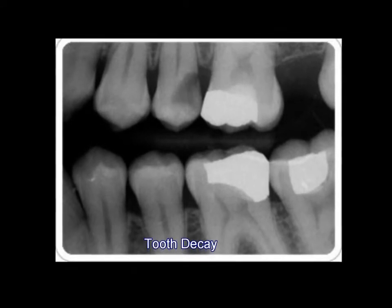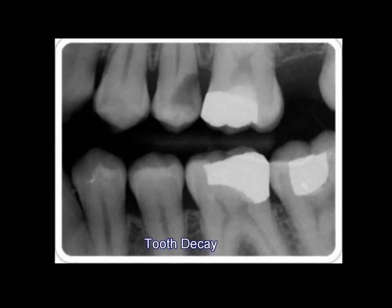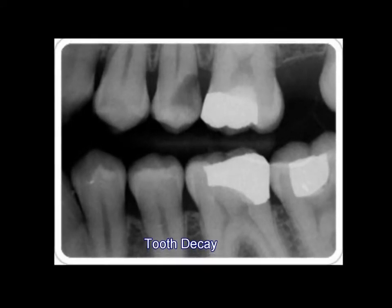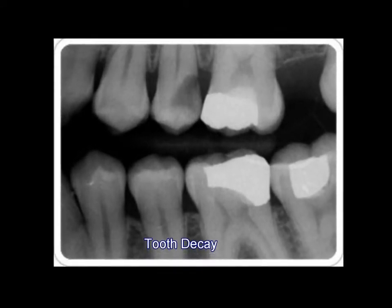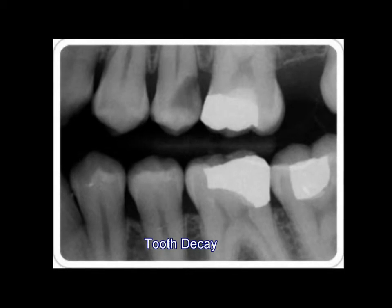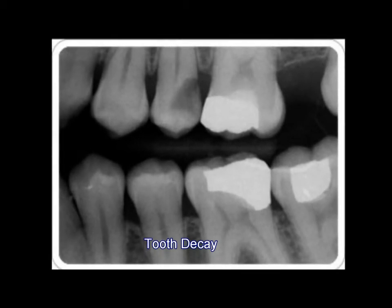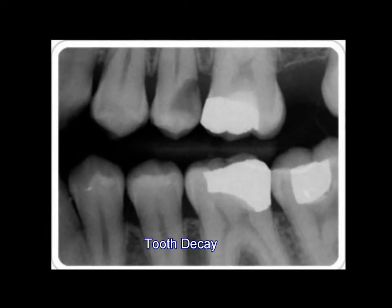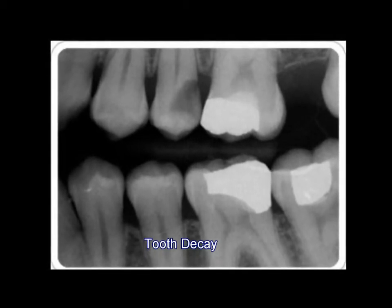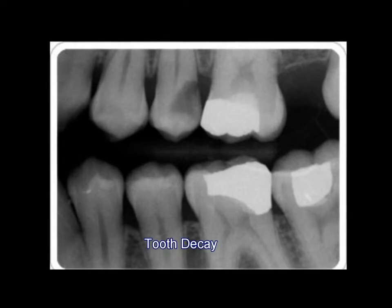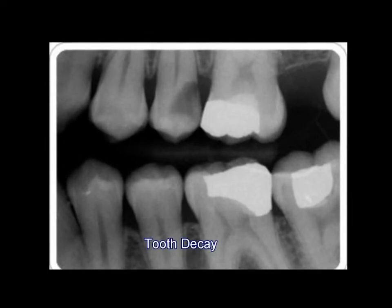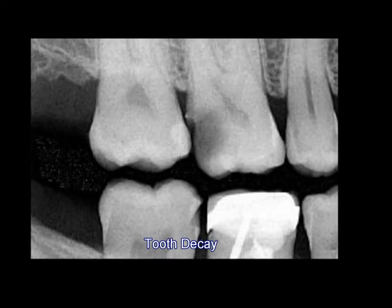As you can see on the x-ray here, tooth decay has gone rampant on this upper tooth, and the dark area that you see is the decay that's caused by the destruction of tooth structure.